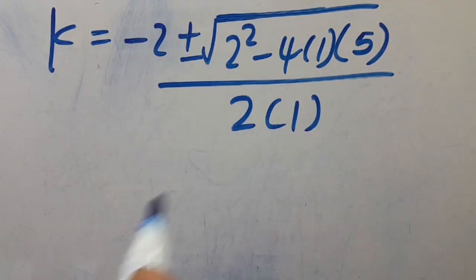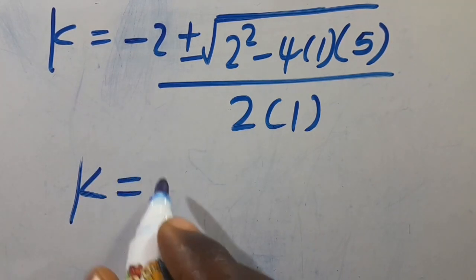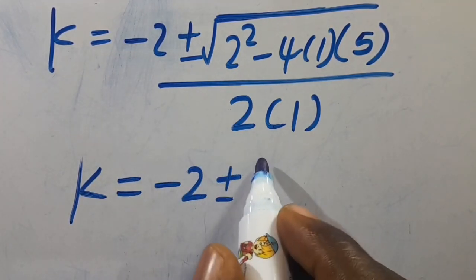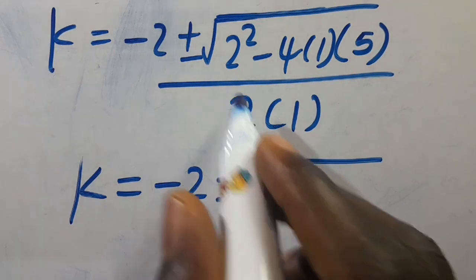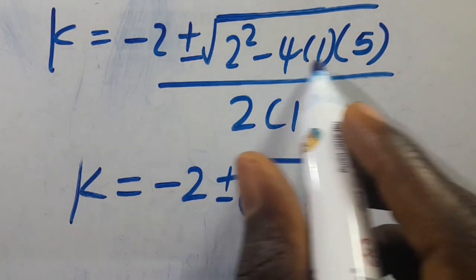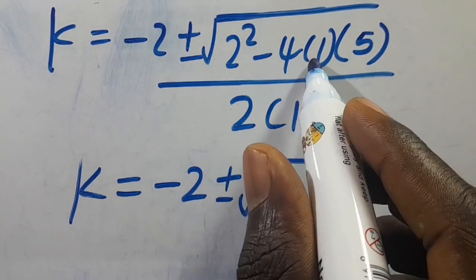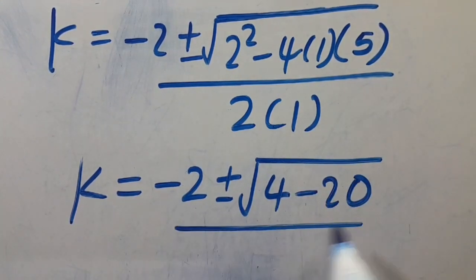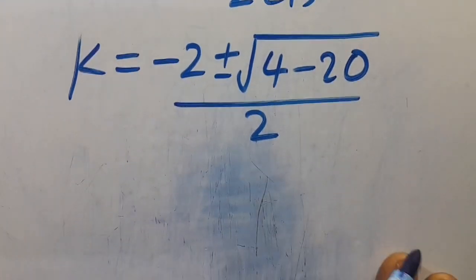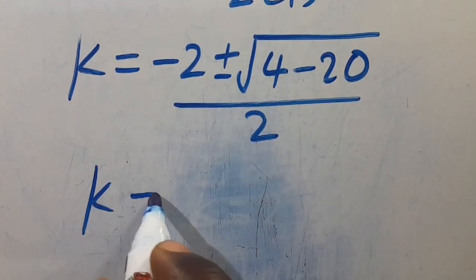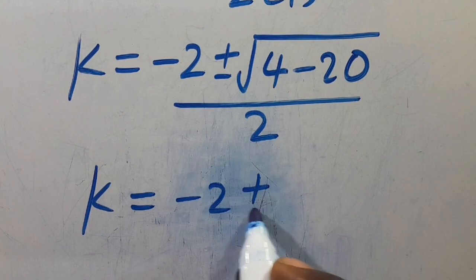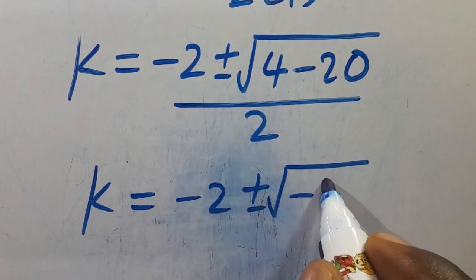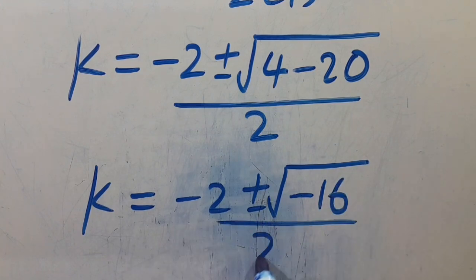From here we have k equals minus 2, positive or negative, square root of 4 minus 4 times 1 times 5, which gives us minus 20, divided by 2. So k equals minus 2, positive or negative, root of 4 minus 20, which gives us root of minus 16, divided by 2.